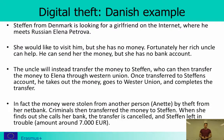There is a good Danish example of digital theft that was in the news a couple of years ago — the names are real. Stefan from Denmark is looking for a girlfriend on the internet and meets Russian Eliana Petrova. They exchange a lot of emails and are very much in love. At some point she would like to come visit him, but she has no money. Fortunately she has a rich uncle who can help — he can send her money, but she has no bank account, so the uncle will transfer the money to Stefan, who can then transfer it to Elena through Western Union, which is an untraceable transfer.